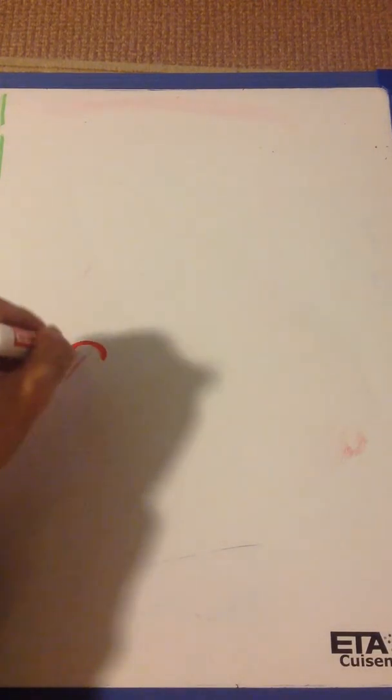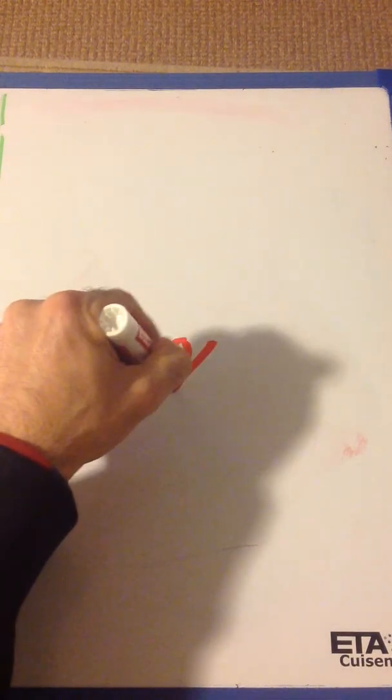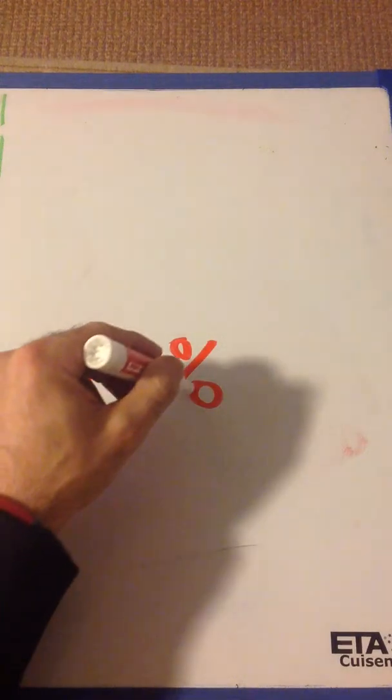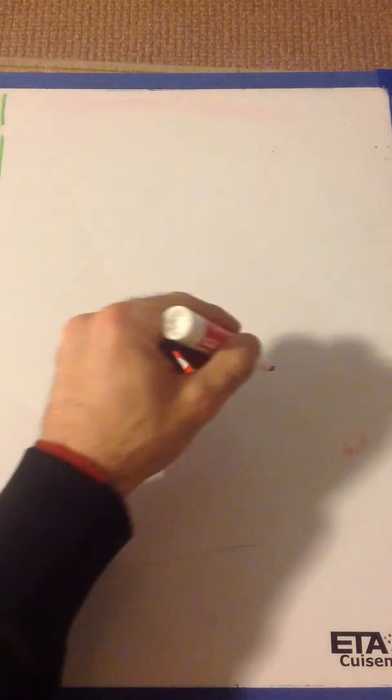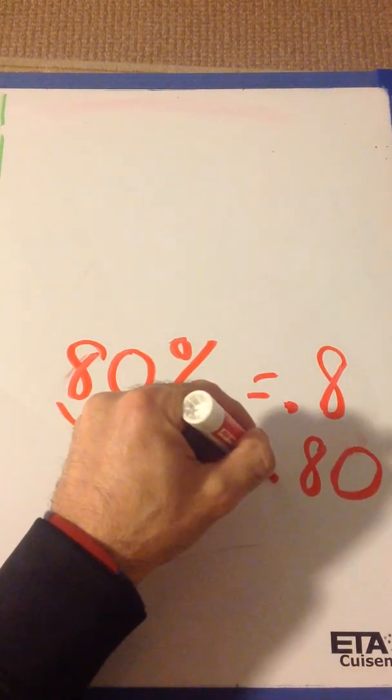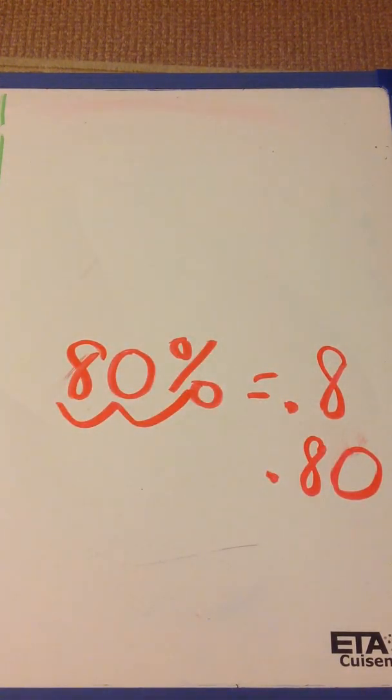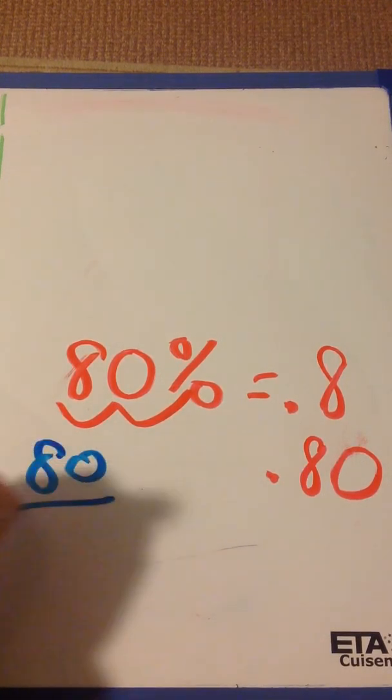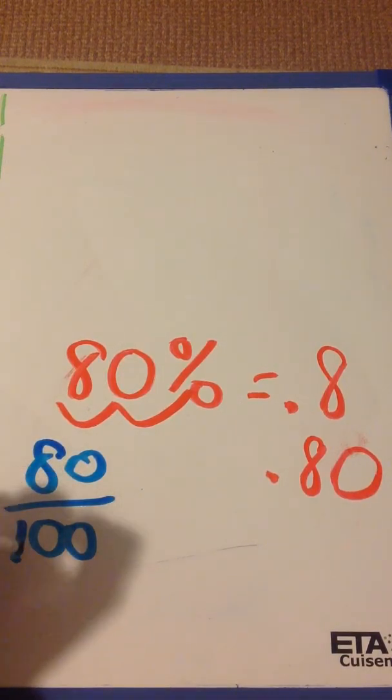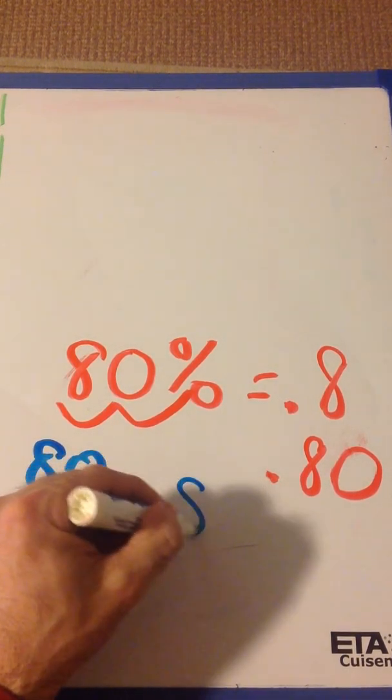Try this one. Make that a decimal and a fraction. Well, just move it twice. And it's 0.8. It's also 0.80. 0.8 and 0.80 are the same thing. Or you could have just made it over 100. 80 over 100. And it's in the 100th place, so you know it's 0.8.